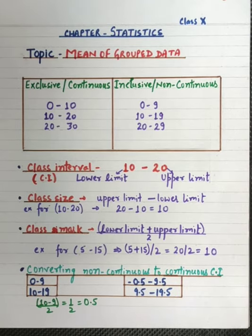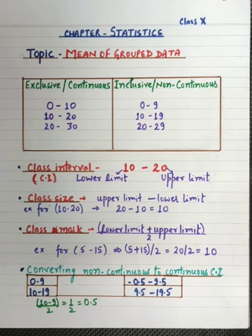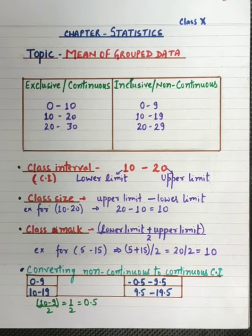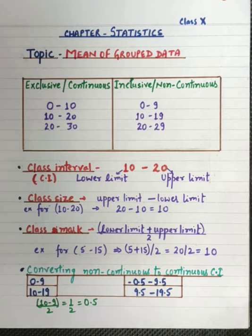Now, what is grouped data? When the data is very large and many values are there, to reduce our work, we form groups. Groups are ranges or class intervals framed according to the data, in which we accommodate the values falling in that particular group.